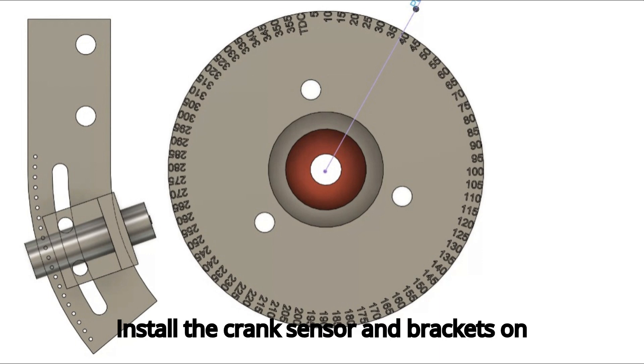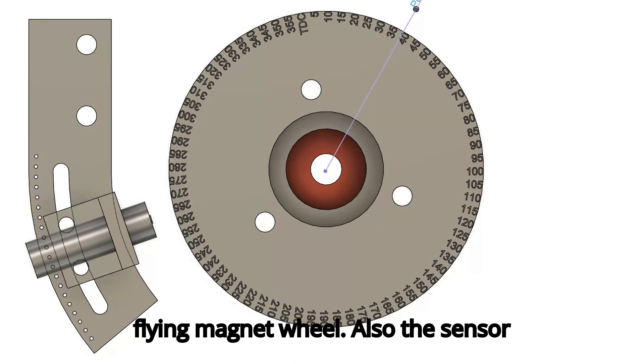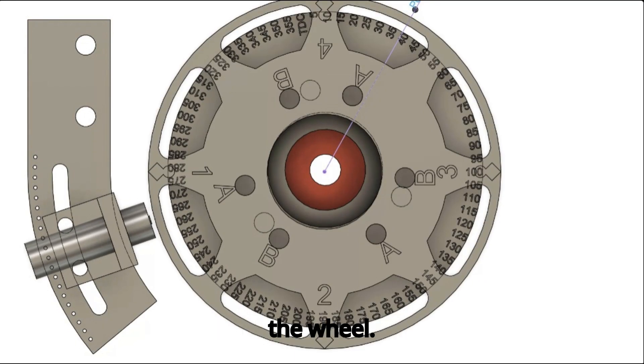Install the crank sensor and brackets on the engine. The sensor should initially be in the middle of the adjustment slot and should have between 50 thousandths and 80 thousandths air gap clearance from the flying magnet wheel. Also, the sensor should be centered to the thickness of the wheel.